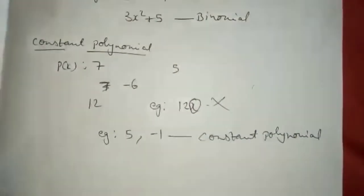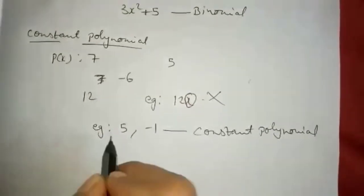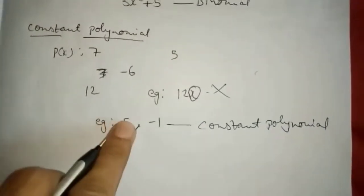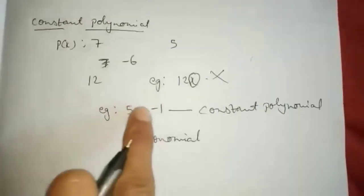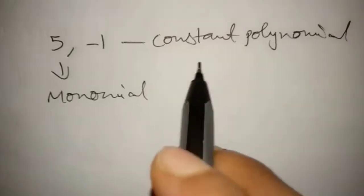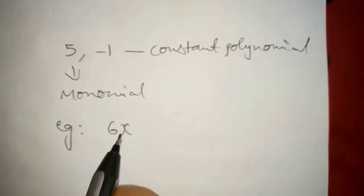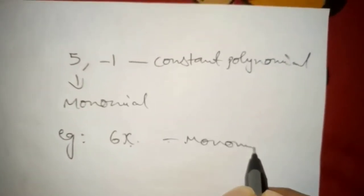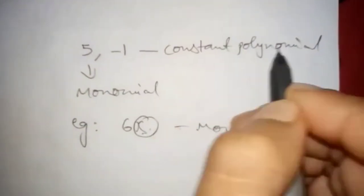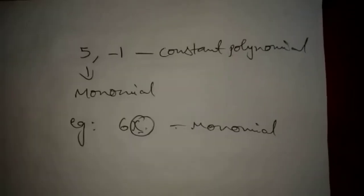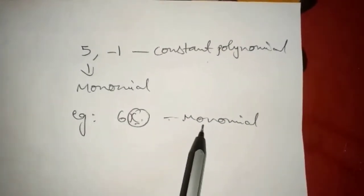Constant polynomial, if we classify according to terms — only one term will be there. So it is a monomial. So every constant polynomial is a monomial. But is every monomial a constant polynomial? No. For example, 6x — only one term is there, so it is a monomial. But is it a constant polynomial? No, because x is there — variable is there. If you have a variable, it cannot be a constant polynomial. So every constant polynomial is a monomial, but every monomial is not a constant polynomial.